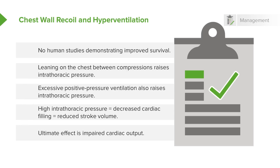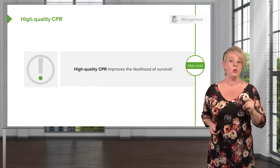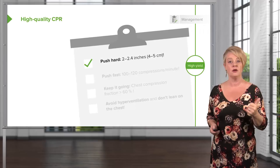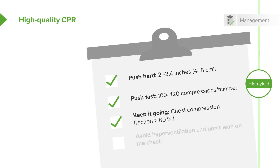The ultimate effect is impaired cardiac output, meaning less blood flow to the heart itself, less blood flow to the brain, and less likelihood of spontaneous circulation. So the bottom line: high-quality CPR is what you need. The determinants are push hard — 4 to 5 centimeters; push fast — 100 to 120 compressions per minute; keep it going with a chest compression fraction of at least 60%; and avoid hyperventilation and chest wall leaning. Do those five things and you increase your patient's odds of survival.